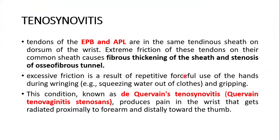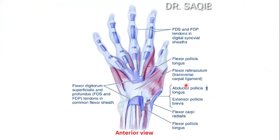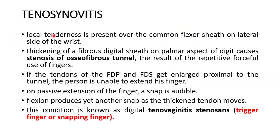Excessive friction is a result of the repetitive forceful use of the hands during wringing — for example, squeezing water out of clothes — and gripping. This condition, known as De Quervain's tenosynovitis or De Quervain's tenovaginitis stenosans, produces pain in the wrist that radiates proximally to the forearm and distally toward the thumb. You can see these two muscles — the abductor pollicis longus and the extensor pollicis brevis — lying on the dorsal aspect. Local tenderness is present over the common tendon sheath on the lateral side of the wrist.